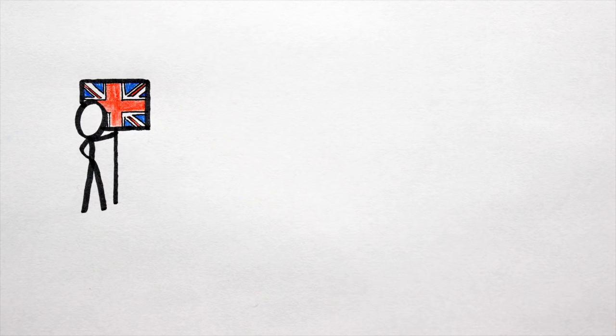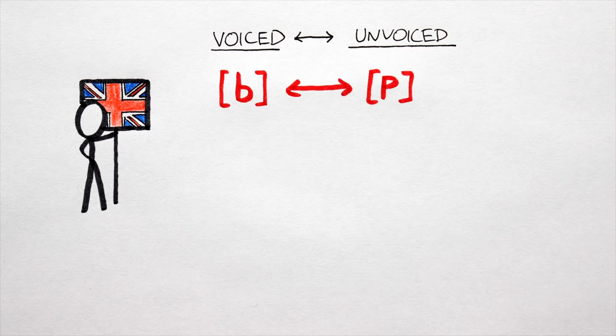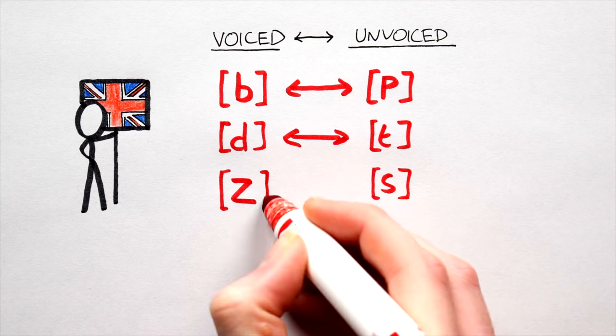In a lot of languages, English included, consonants tend to show up in voiced and unvoiced pairs, like P and B, T and D, S and Z, and so on.